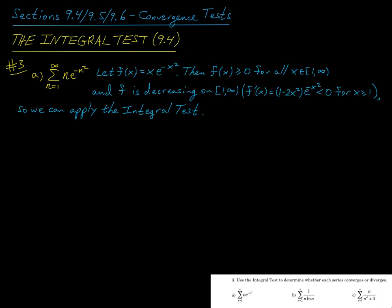To begin, we'll let f of x equal x times e to the negative x squared. In order to apply the integral test, this function f needs to satisfy the following two conditions: f needs to be non-negative on the interval from 1 to infinity, because our sum starts at 1, and f needs to be decreasing on this interval.